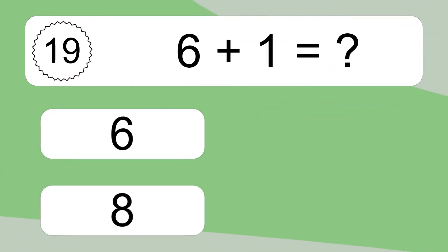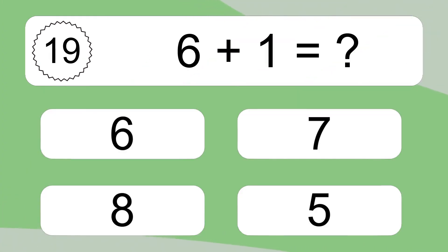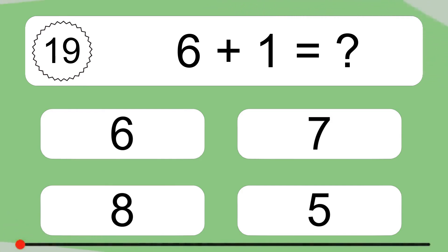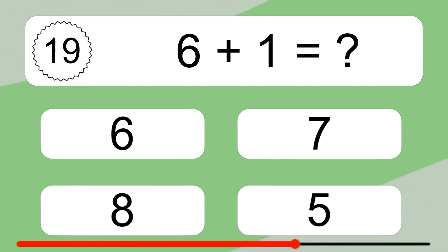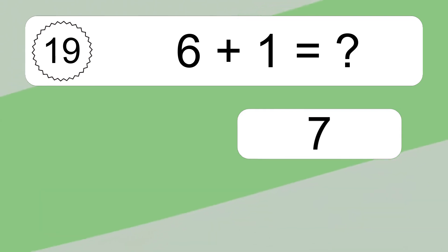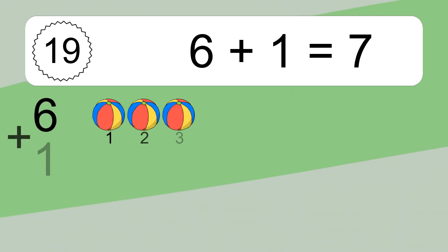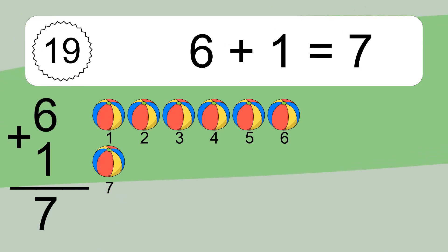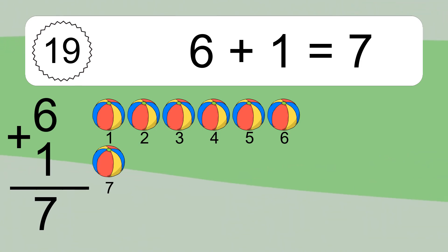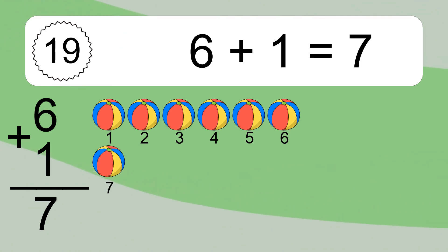6 plus 1 equals what? 6 plus 1 equals 7. Let's count it: 1, 2, 3, 4, 5, 6, 7.